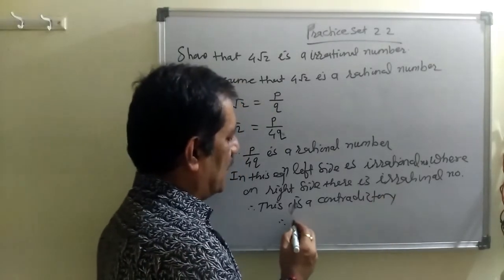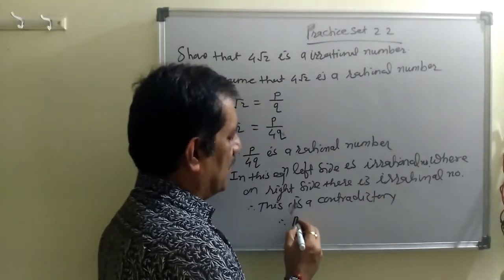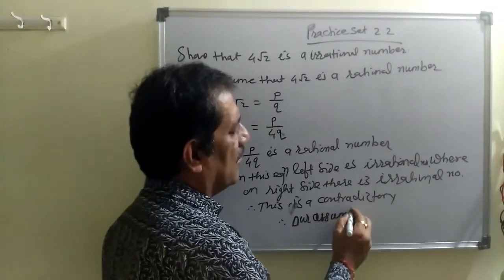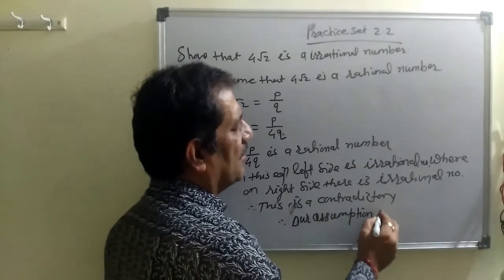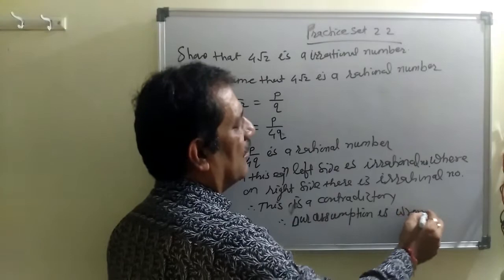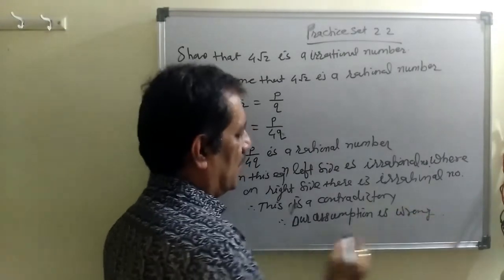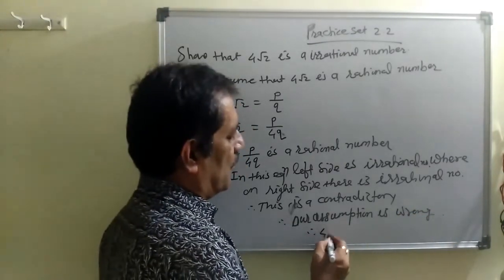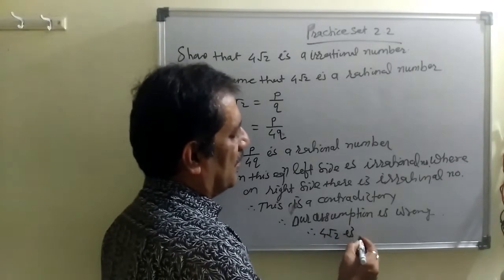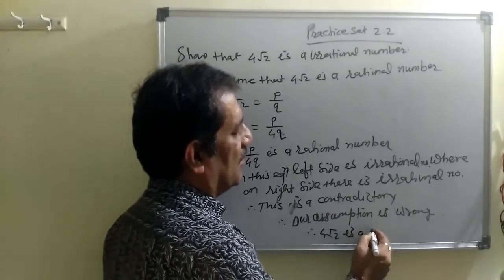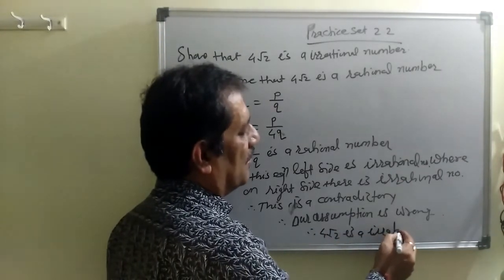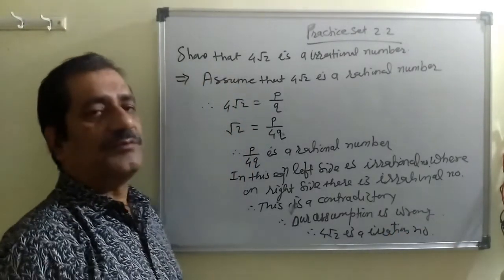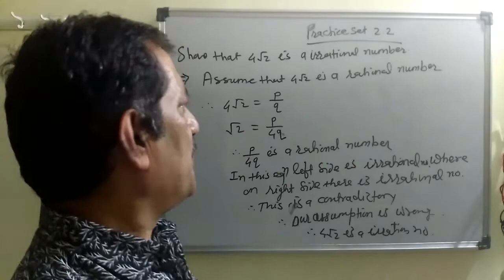Therefore our assumption is wrong. Therefore 4 root 2 is an irrational number. This is proved using the indirect method — assume it, reach a contradiction, and conclude the assumption is wrong. Simple.